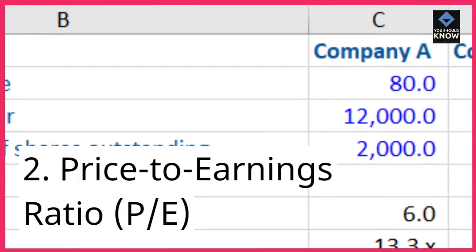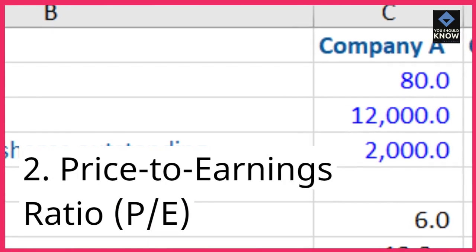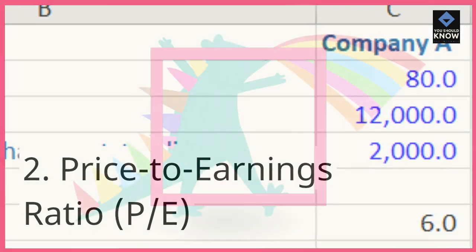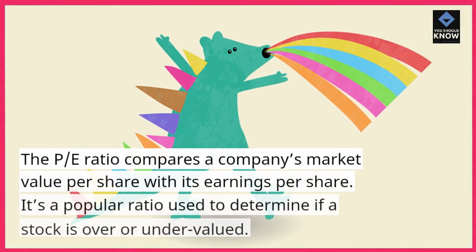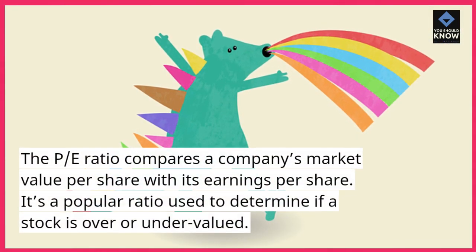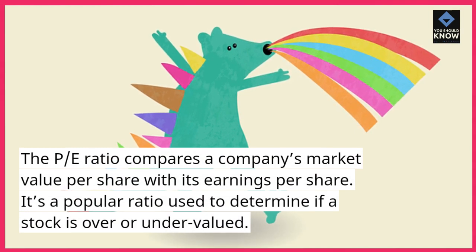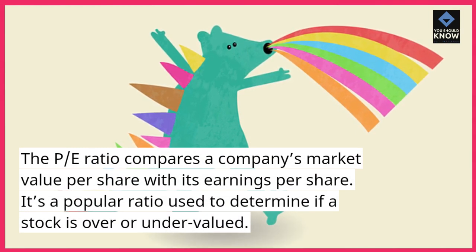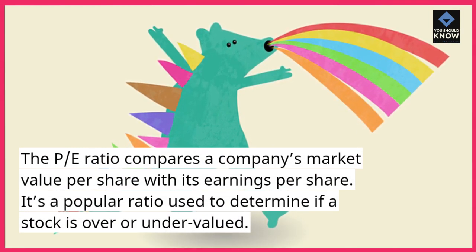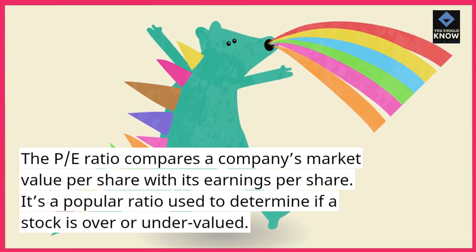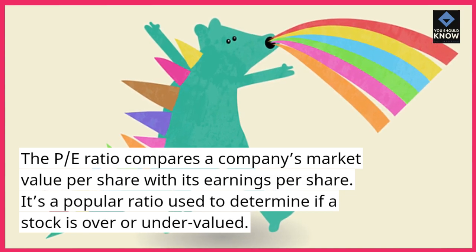2. Price to Earnings Ratio (P/E). The P/E ratio compares a company's market value per share with its earnings per share. It's a popular ratio used to determine if a stock is over or undervalued.